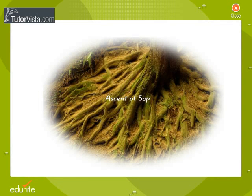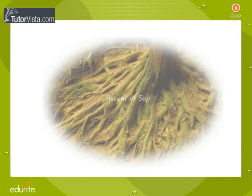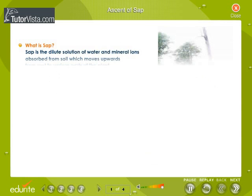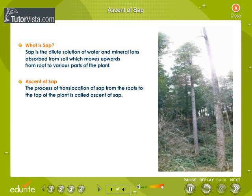Ascent of Sap. What is Sap? Sap is the dilute solution of water and mineral ions absorbed from soil which moves upwards from the root to various parts of the plant.